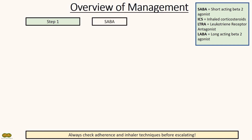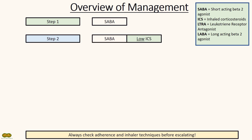Step 1 is the introduction of a short-acting beta-2 agonist, or salbutamol inhaler. Step 2 adds a low dose of inhaled corticosteroids on top of salbutamol. According to NICE guidelines, start straight at step 2 if the patient has asthma symptoms three times a week or more, or is woken up at night by asthma symptoms once weekly or more.